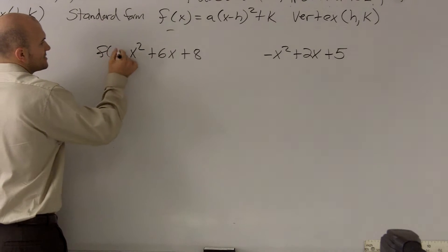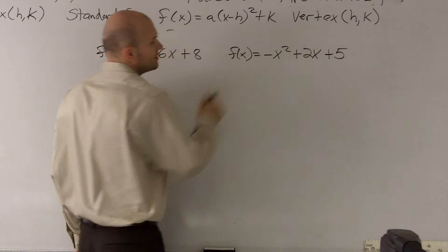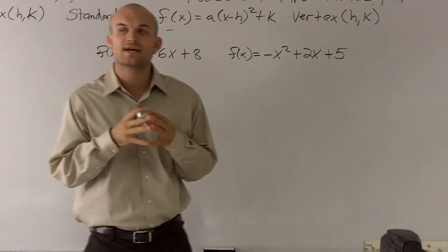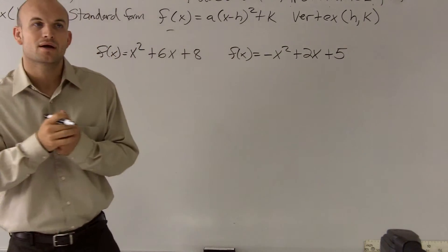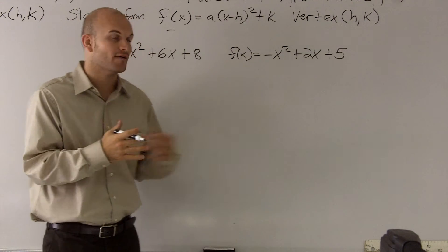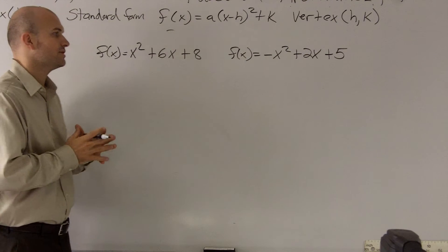Alright, what I'd like to do is show you guys how to complete the square of a function so we can get it into standard form so we can find the vertex of our parabola. The first thing we need to make sure we do is we need to make sure that we have our x squared terms and there's nothing in front of them.